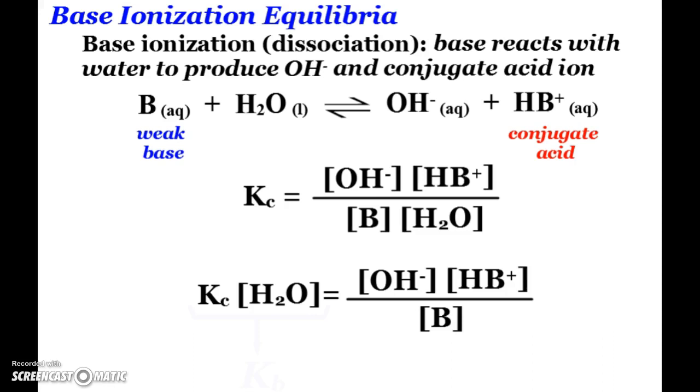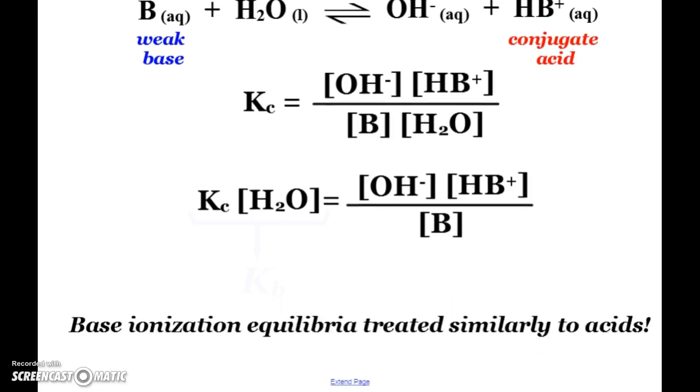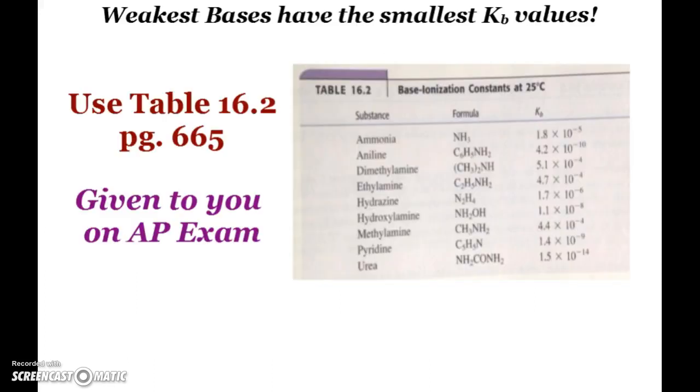Base, same thing going on. A weak base reacts with water. It accepts the hydrogen, so we form hydroxide, and so we have, ultimately, a Kb expression, which is just Kc, and that water is constant, so it's just kind of blended in with the Kc to make Kb. And we do problems the exact same way as we just did with the acid, except when we have to deal with pH, we'd have to make sure we switch to pOH, because we have hydroxide in our equilibrium.